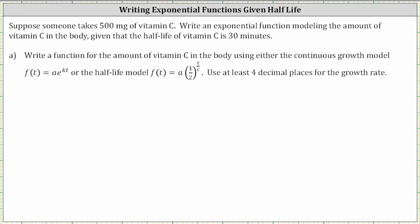We will determine an exponential function in the form f(t) = a times e raised to the power of kt, where a is the initial or starting amount, k is the exponential growth or decay rate, t is time in minutes or hours, and f(t) is the amount after time t. Because we have exponential decay, our k value is going to be negative.